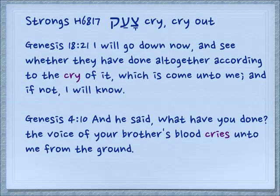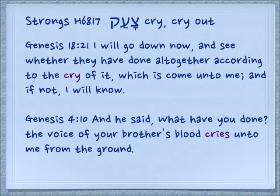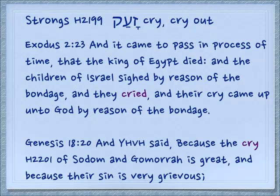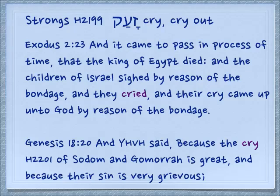Now as we substitute the middle letter — going from chet to ayin — it still means to cry out, to make a noise. Genesis 18:21: 'I will go down now and see whether they have done altogether according to the cry of it' — this is the noun form — 'which has come unto me, and if not I will know.' Again in Genesis 4:10: 'The voice of your brother's blood cries unto me from the ground.' From here, changing the tzadi to a zayin, it still means to cry out. Genesis 2:23 — and it came to pass that the king of Egypt died and the children of Israel sighed by reason of the bondage, and they cried, and their cry came up to God by reason of the bondage. Also talking about Sodom and Gomorrah, this time with the zayin, Genesis 18:20: 'And Yehovah said, because the cry of Sodom and Gomorrah is great, and because their sin is very grievous.'